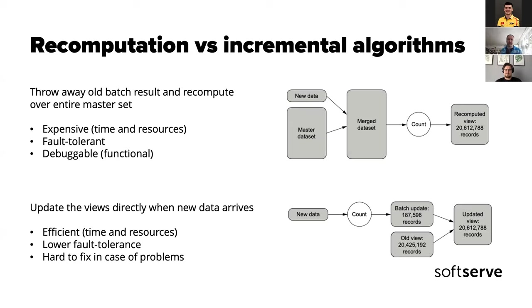That's why it's important to remember when working with batch processing: incremental is always tempting because it's fast and costs less, but from time to time mistakes will happen. You need a recomputation algorithm in place to fix those mistakes. You should probably start with the recomputation algorithm and then move to the incremental one, not the other way around.